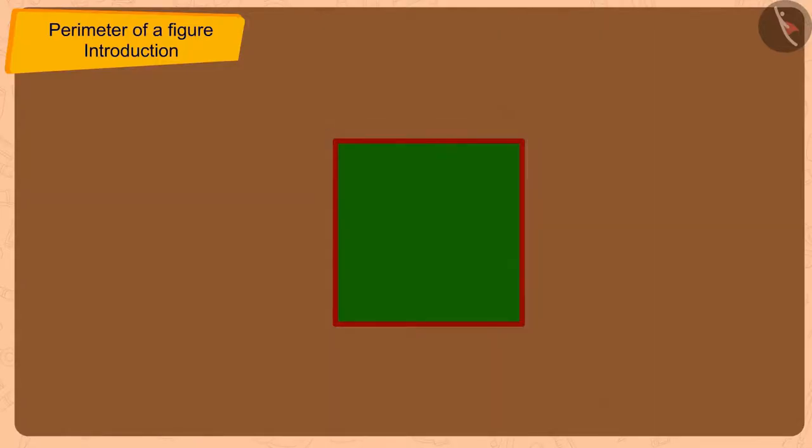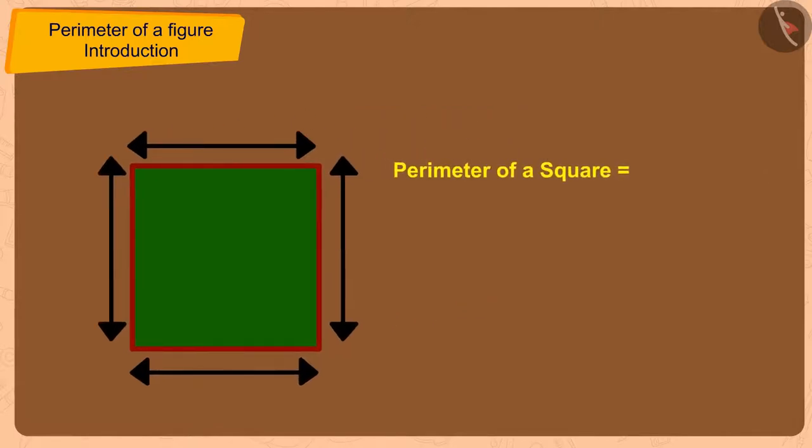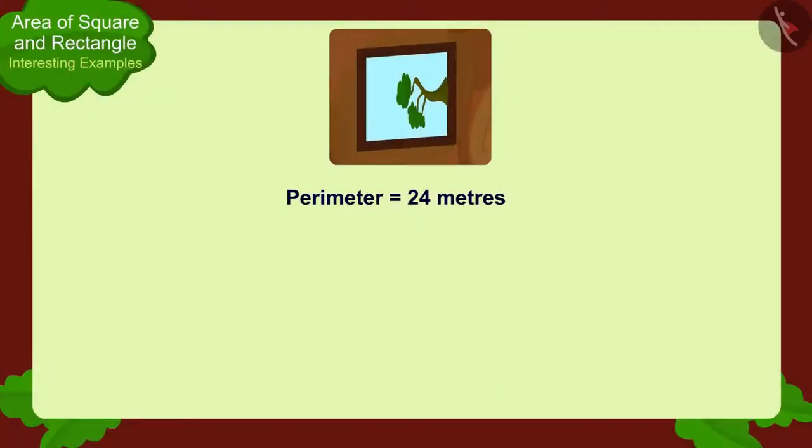As we saw in the previous video, since all the edges of a square are exactly the same, we can find the perimeter of a square by multiplying the length of any edge by four. Therefore, the perimeter of a square shaped window will be four times the length of any of its edges.